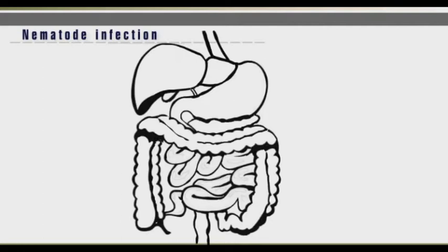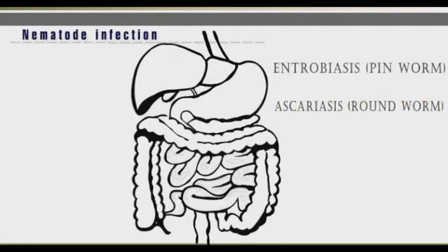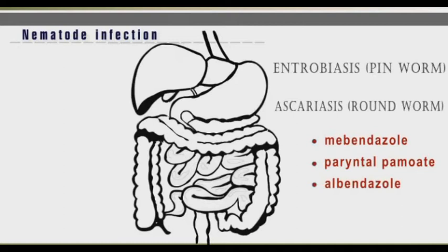Examples of nematode infections are Enterobiasis, which is also known as pinworm disease, and Ascariasis, which is known as roundworm disease. Common antinematode drugs include Mebendazole, Pyrantel pamoate, and Albendazole.